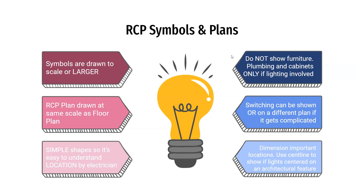When you get into actually drawing this, the rule of thumb is that symbols are drawn to scale or even larger. Fred and I use three-inch puck cans — three inches is really hard to see on smaller scale plans, so I might draw them as six-inch circles but note they are three-inch puck lights. The electrician just needs to know what's going where. You draw your plan at the same scale as your floor plan, which is already set up. Use really simple shapes — basically circles for most fixtures and sometimes squares.